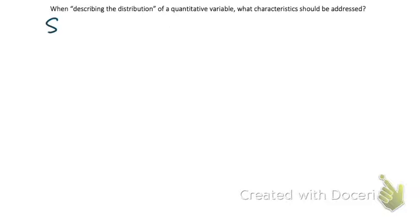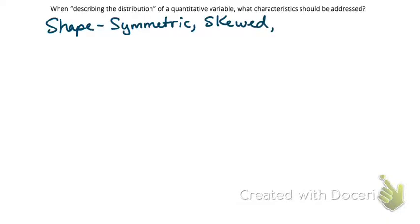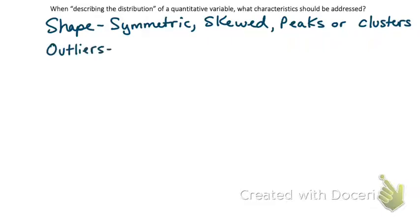We've already talked about shape — we're going to notate whether it's symmetric or skewed. We can also talk about any peaks or clusters. We are definitely going to want to identify any outliers. What are outliers anyway? It's like that kid who sits at the lunch table by himself — he's an outlier, obviously away from the group.